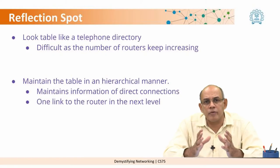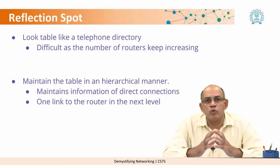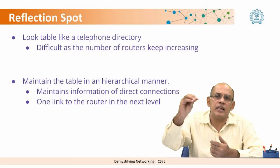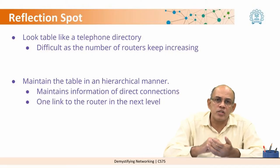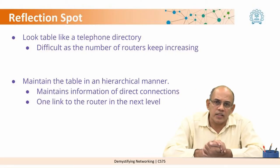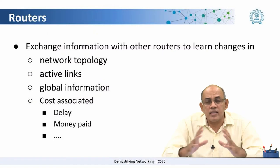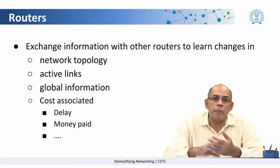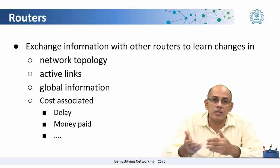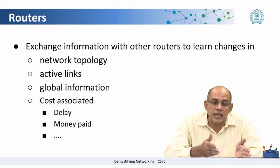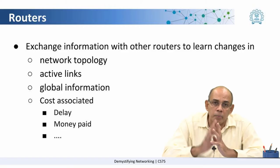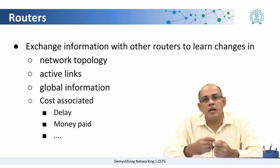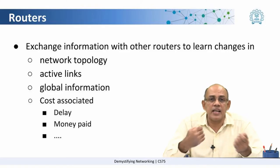A router maintains all the information about the networks to which it is directly connected, and it maintains one link to a router going into the next level of the network. These routing tables also have to deal with the fact that some links may go up or down, and some networks may become inaccessible along a particular path.